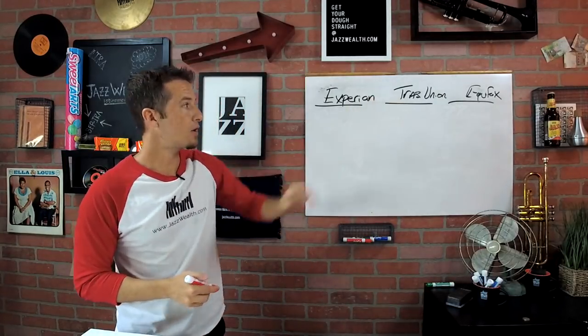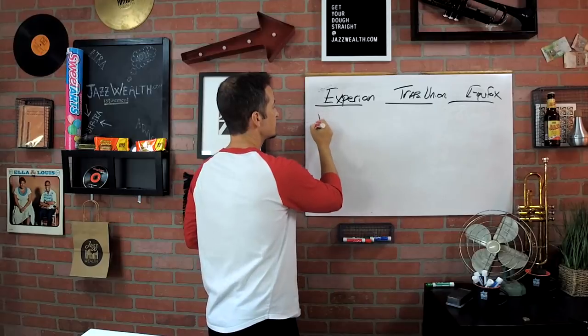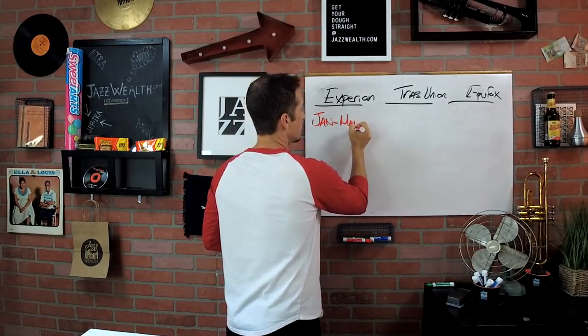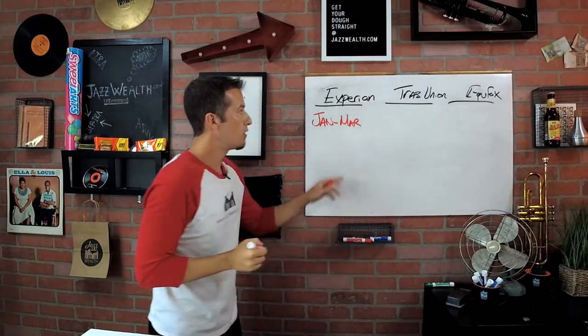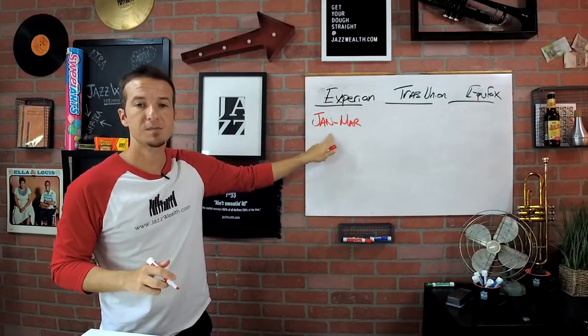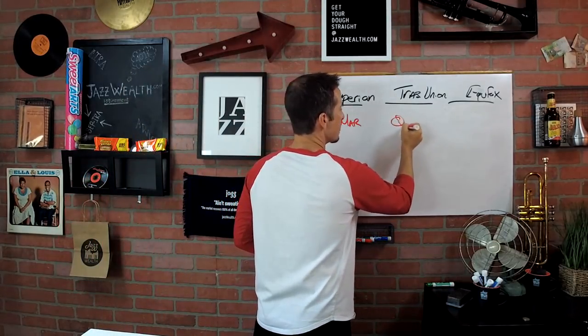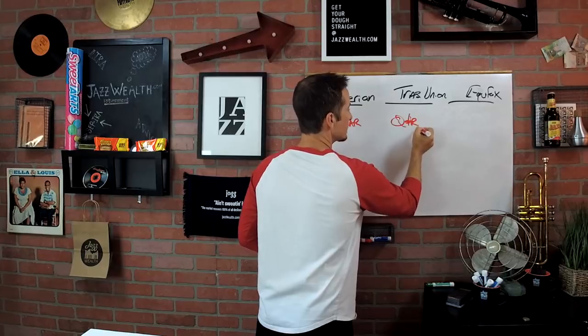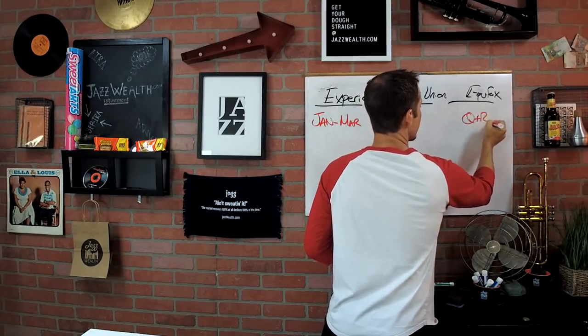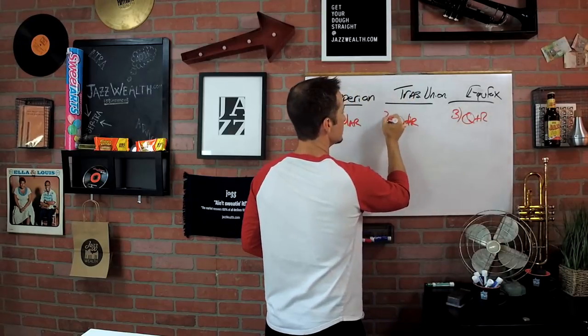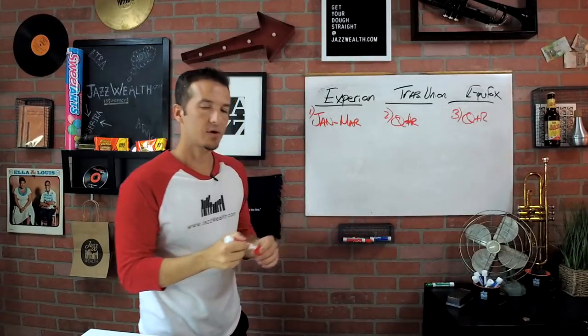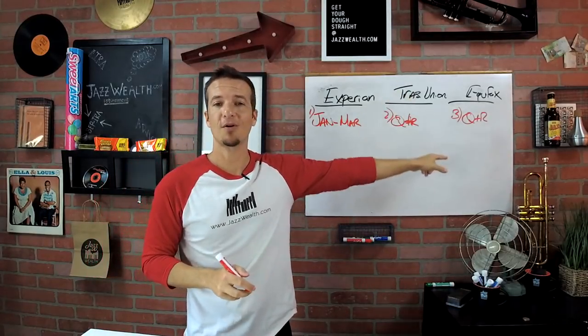So here's the thing. How do you know if there's an error? How do you check your credit report? Here's what you're going to do. You've got these three credit reporting agencies. Sometime between January and March, you're going to check your Experian credit report. Sometime in the next quarter, you're going to go to TransUnion. And sometime in the next quarter, third quarter, you're going to go to Equifax. First quarter, second quarter, third quarter.